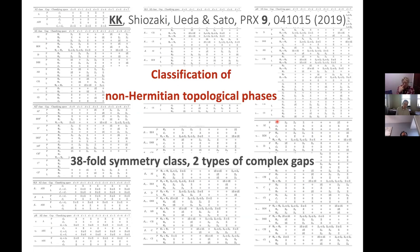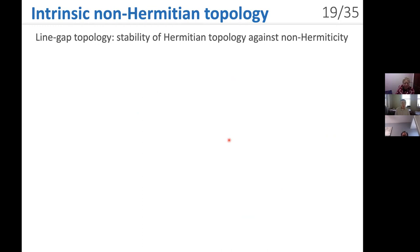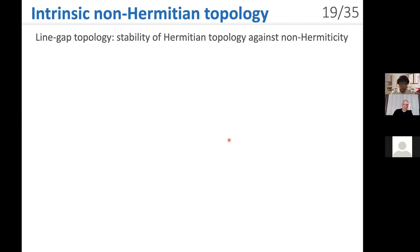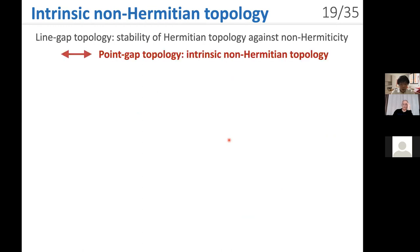In this manner, we have a classification table of non-Hermitian topological phases. In contrast to Hermitian counterparts, it consists of 38-fold symmetry classes and two types of complex energy gaps. Line gap topology reduces to Hermitian topology and hence describes the stability of Hermitian topology against non-Hermiticity. On the other hand, a point gap topology is not necessarily reformable to Hermitian topology and can be intrinsic to non-Hermitian systems.